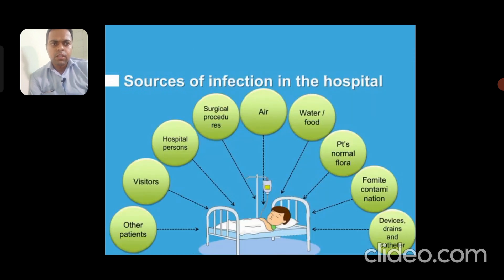Sources of infection in the hospital may be other patients, visitors, hospital personnel, surgical procedures, air, water, food for patients, normal flora or contamination flora, drains and catheters. These are the sources of infection in the hospital.